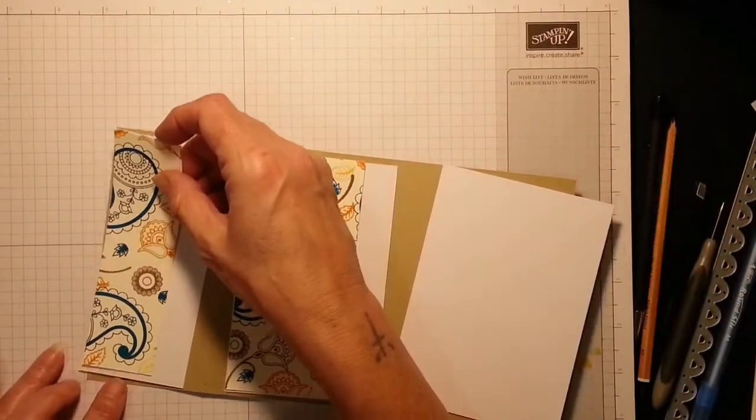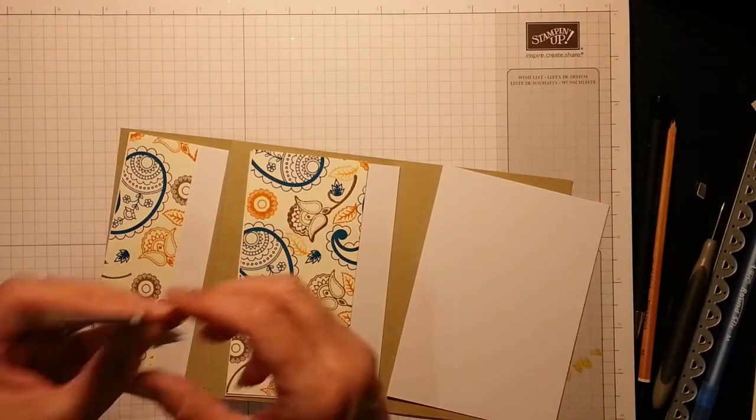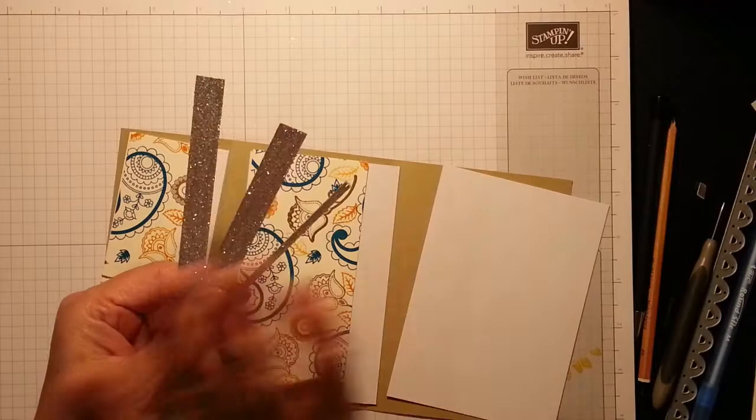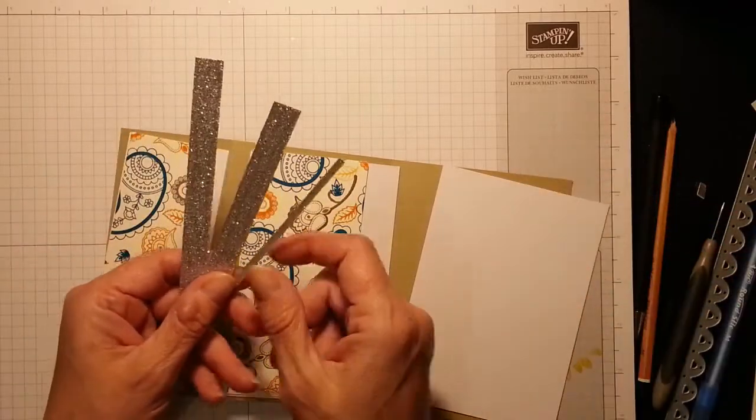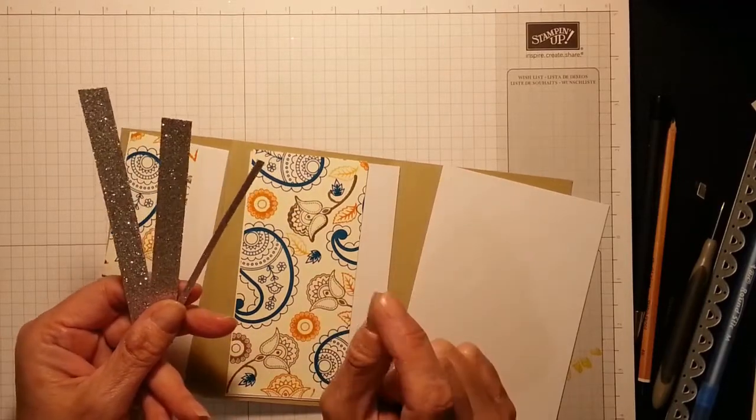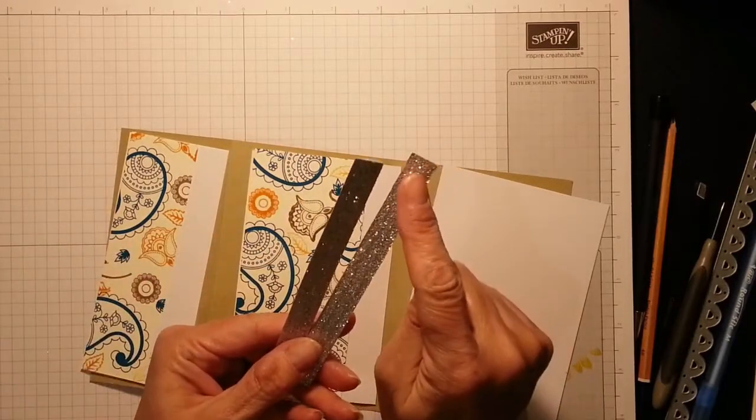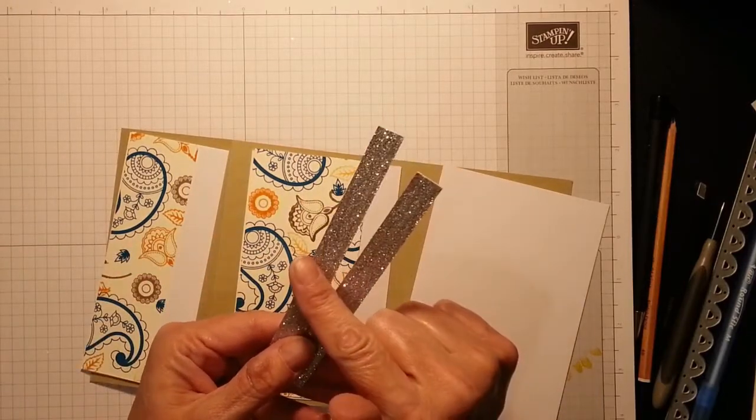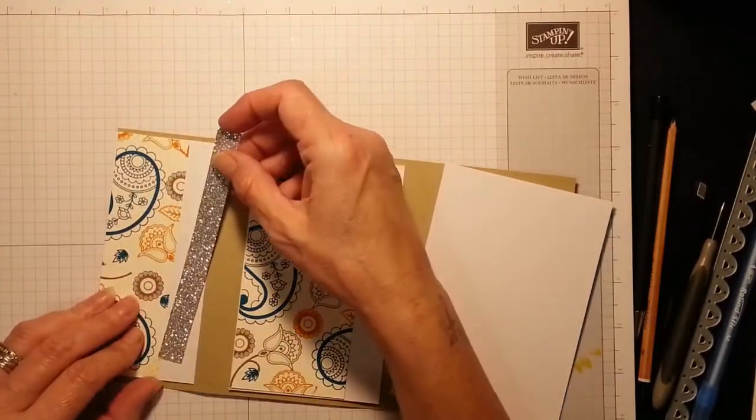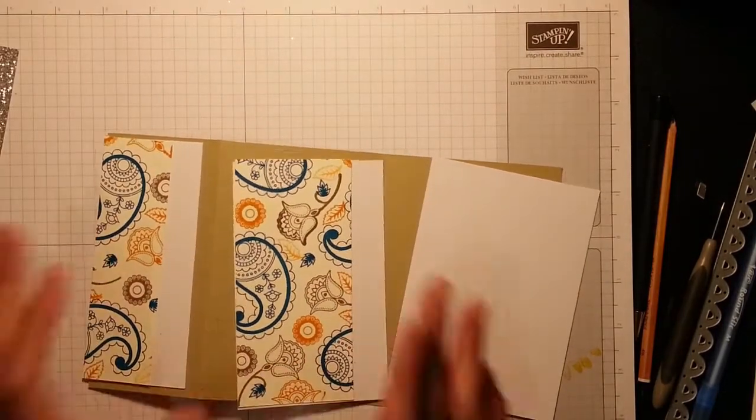We are going to be adding three strips of the silver glimmer paper. Again, they're all five and a quarter. This one is one eighth, it's just a sliver but it's so easy. These two are half inch by five and a quarter, and I'm just going to add these next to here just to break it up.